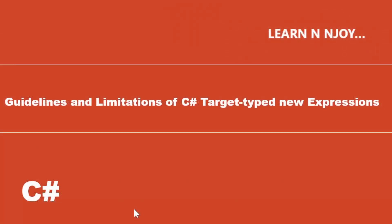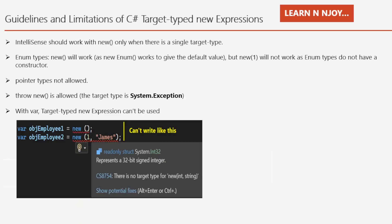Now let's discuss guidelines and limitations of C# target-type new expressions. First, IntelliSense in Visual Studio should work with 'new' only when there is a single target type. Second, for enum types in context with target-type new expression, 'new()' works like the default enum value, but 'new(someValue)' will not work as enum types do not have a constructor. Third, pointer types are not allowed. Fourth, 'throw new' is allowed because it targets System.Exception. Fifth, with 'var', target-type new expression cannot be used because the type is not known — you'll get 'there is no target type' error.